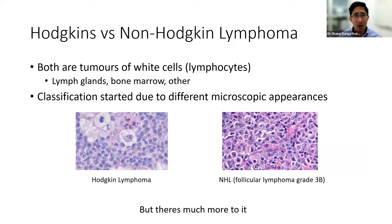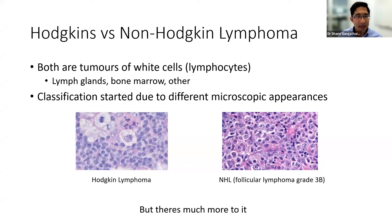All lymphomas are tumours of white blood cells — specifically lymphocytes. These lymphocytes circulate throughout your whole body, sitting in lymph glands and bone marrow to fight infection. When they grow out of control, they cause enlarged lymph glands and a lymphoma. Classification began when enlarged lymph glands were examined under the microscope. Thomas Hodgkin found very characteristic appearances — these really big cells called Reed-Sternberg cells, which are the abnormal cells growing out of control.